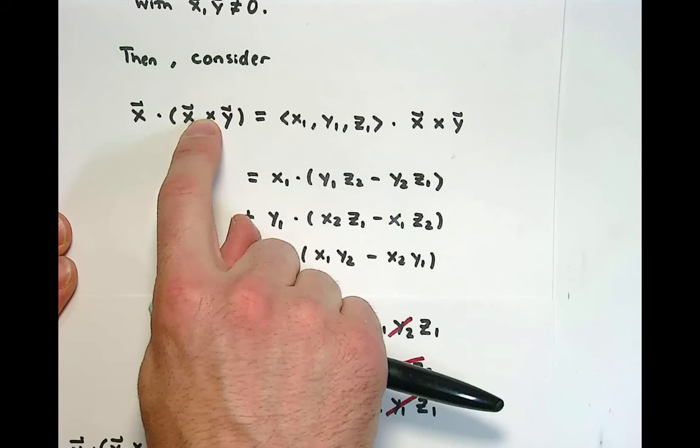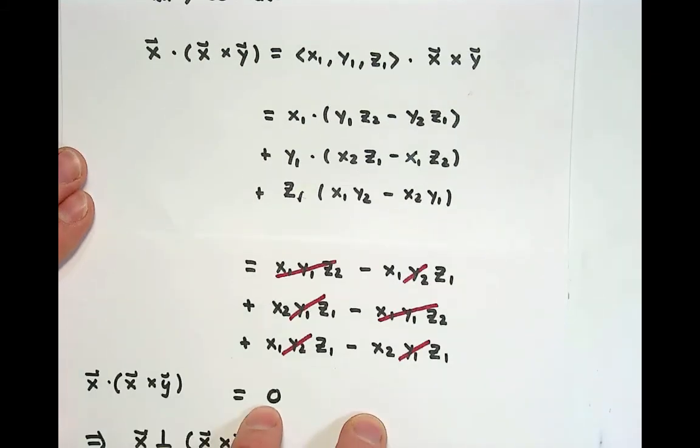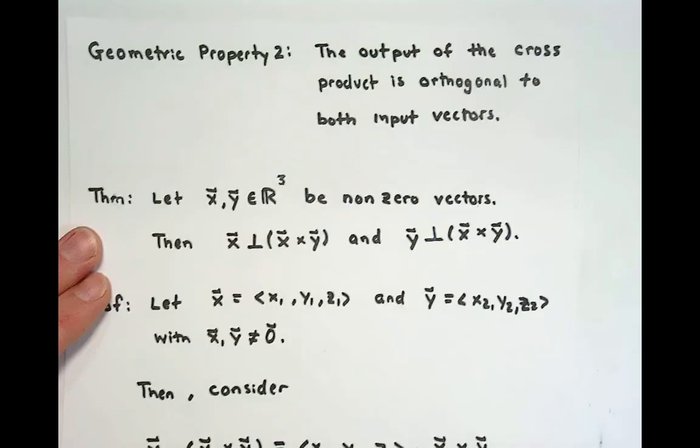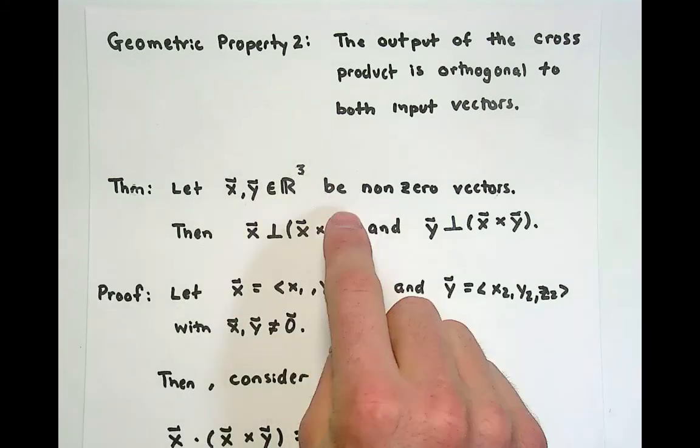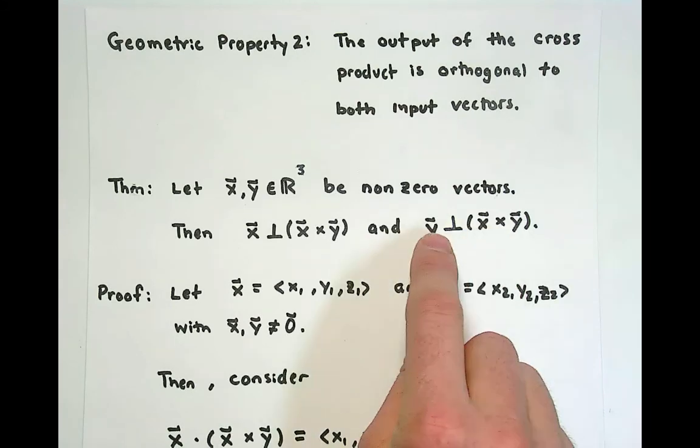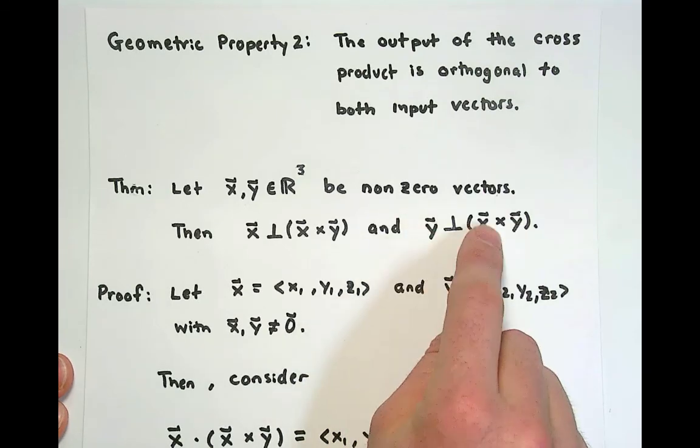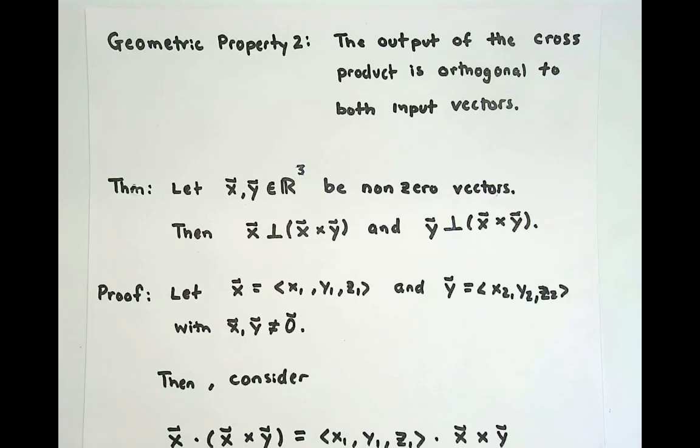I encourage the viewer to do the same confirmation with the y term. Check that y dot the cross product between the two indeed produces the zero scalar as we've shown here. We have these two geometric interpretations. Parallel vectors produce zero cross products. And indeed, the cross product produces a vector that is orthogonal to both of these. In the next video, we're going to derive the sine formula for the cross product, which gives us connection between the component form and the angle between the vectors. See you there.